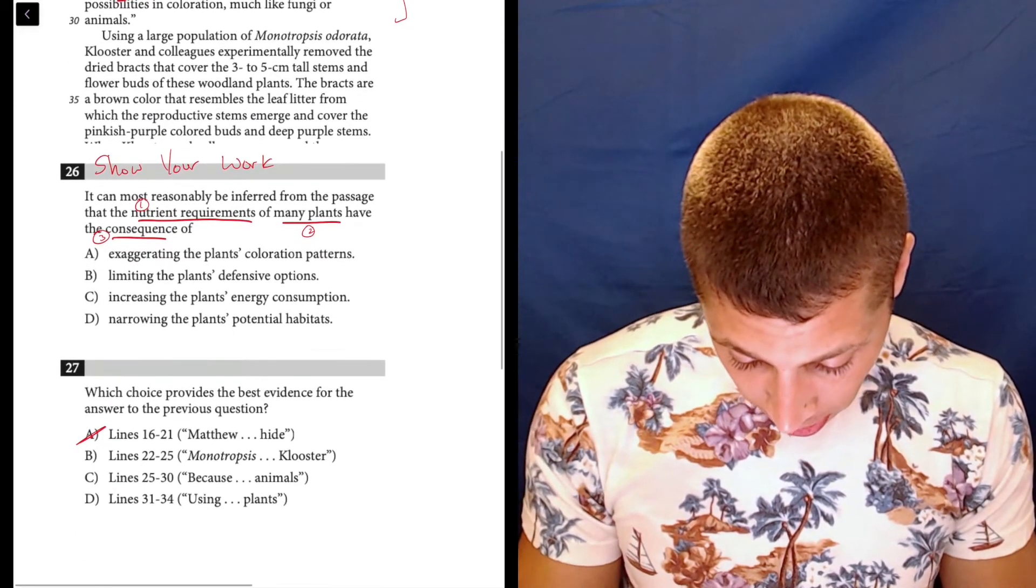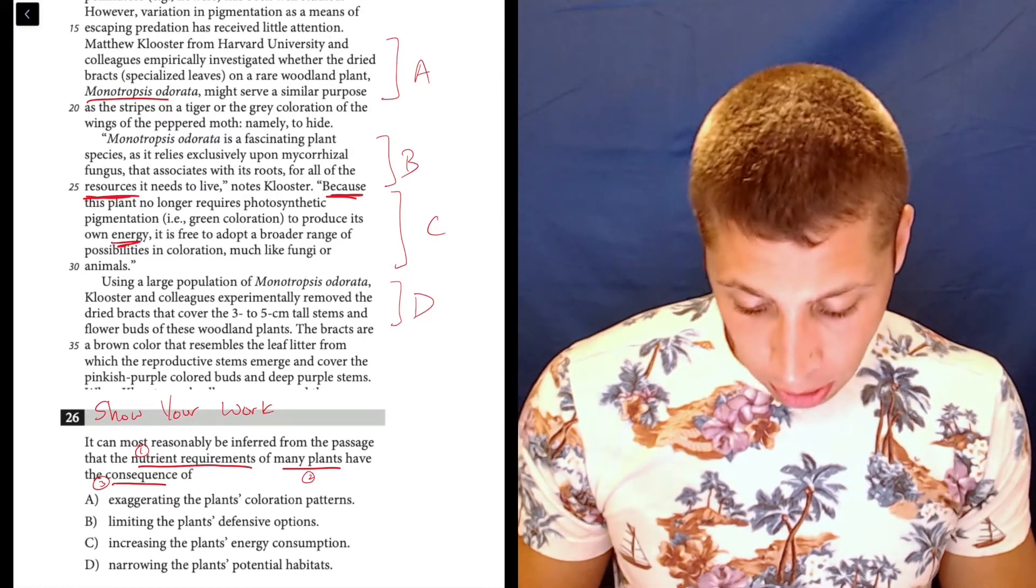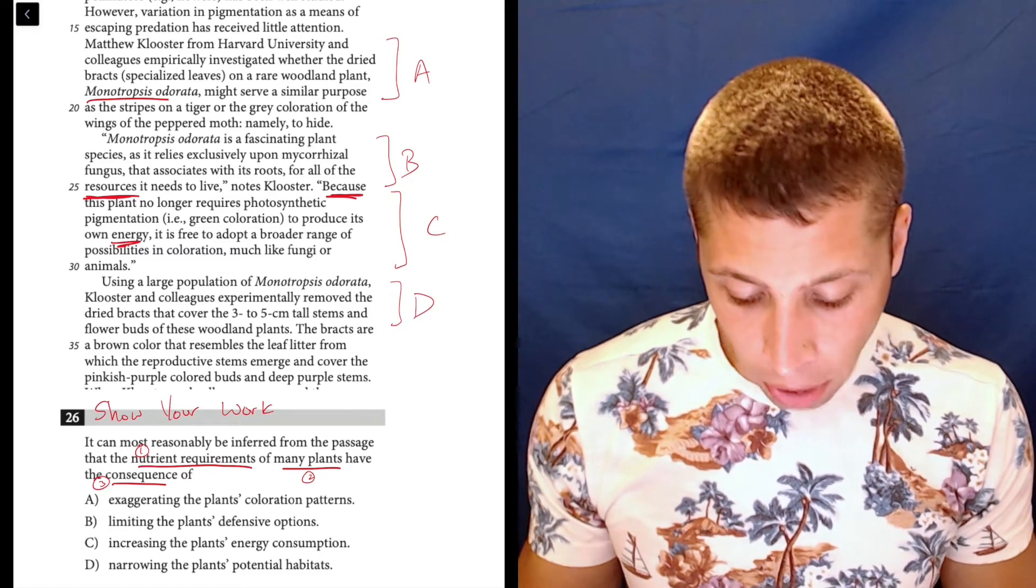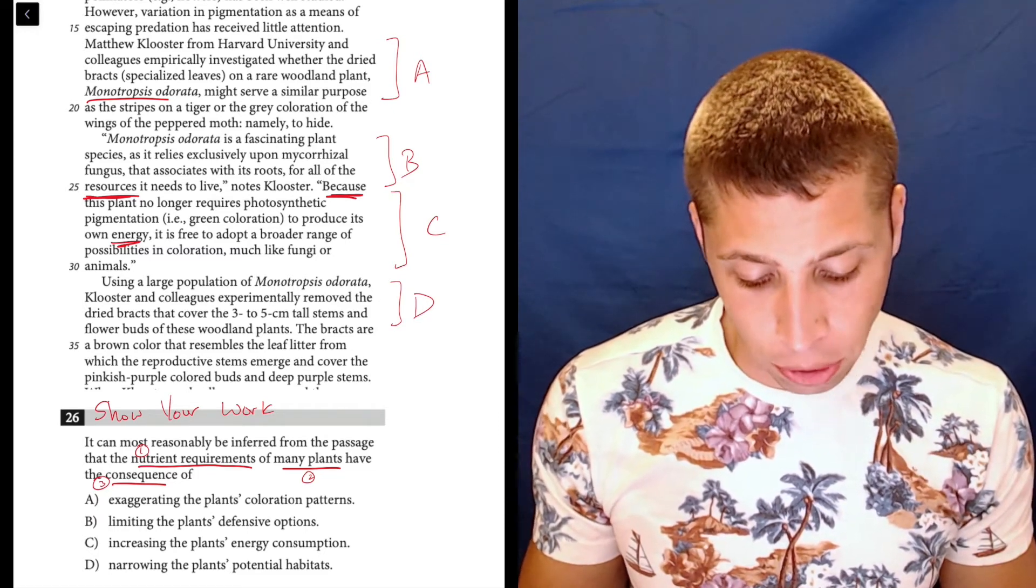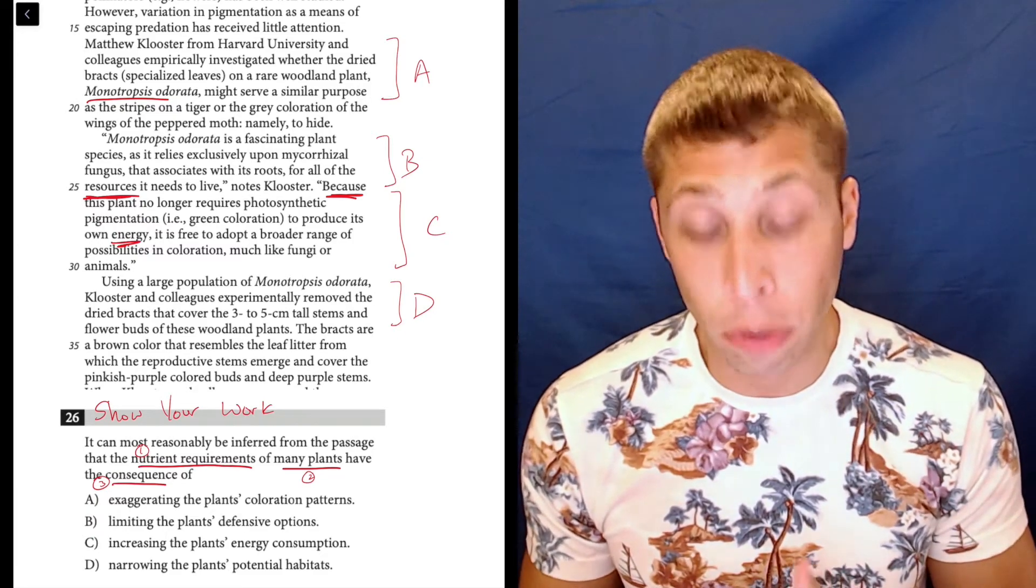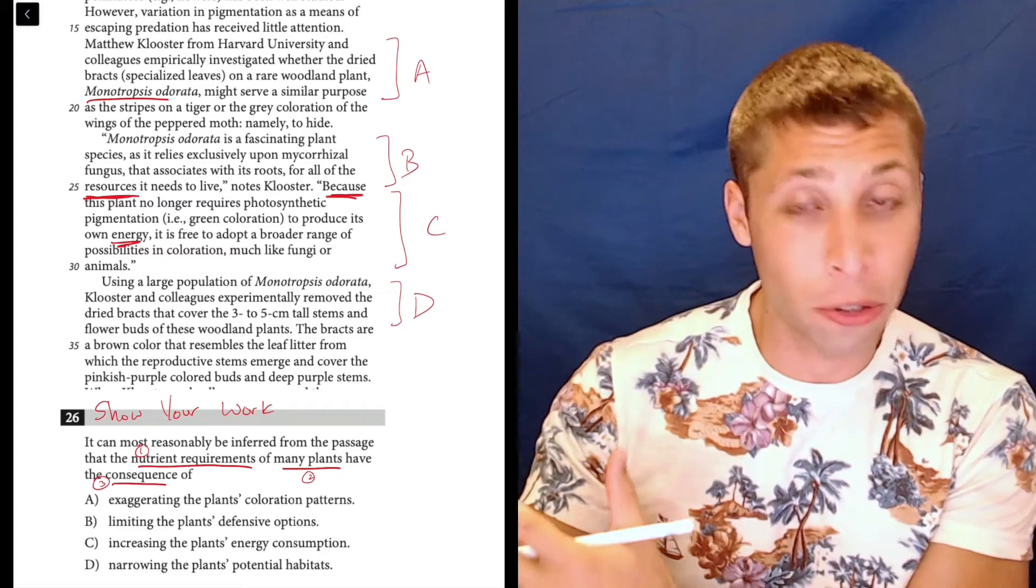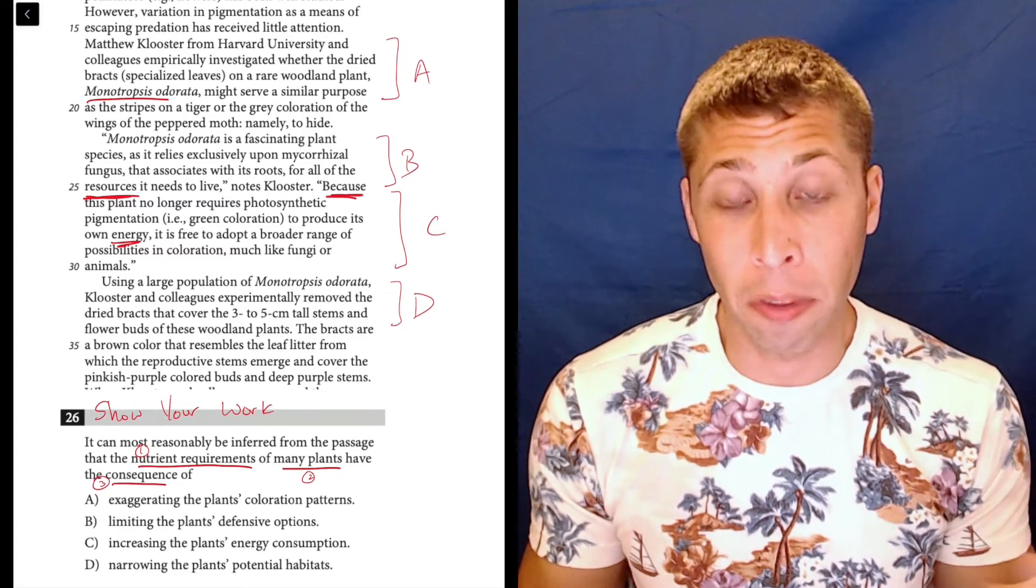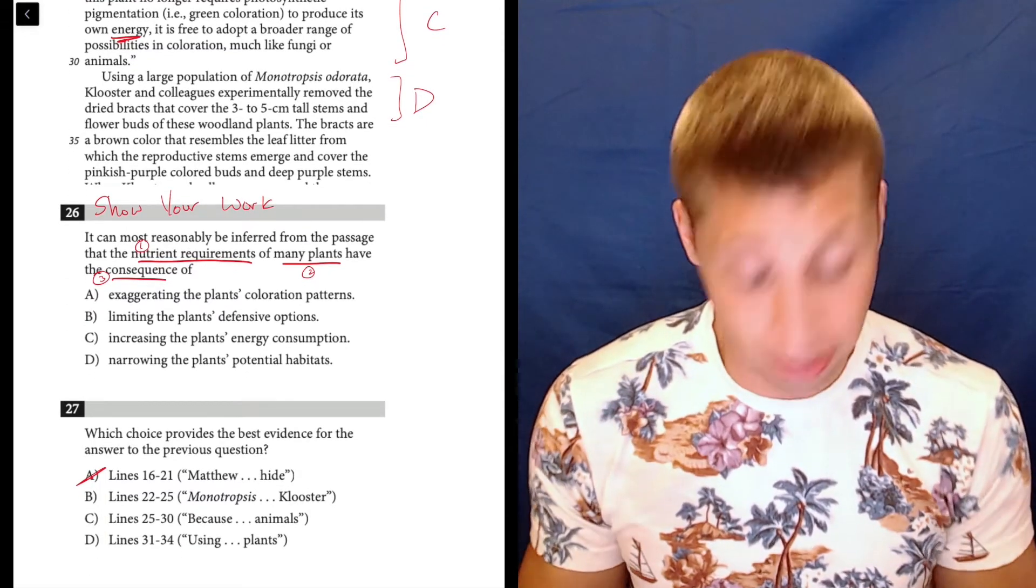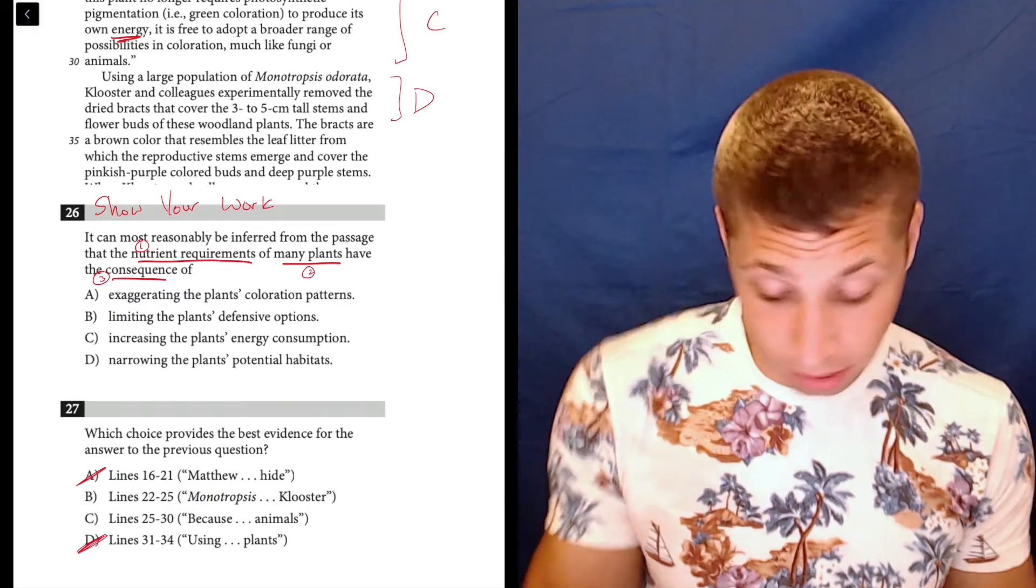Let's look at D, 31 to 34. Using a large population of Monotropsis odorata, Klooster and colleagues experimentally removed the dried bracts that cover the 3 to 5 centimeter tall stems and flower buds of these woodland plants. Well, that doesn't tell me anything about the nutrient requirements. There's no consequence here, because it's what the experimenters are doing, not any consequence of the plant itself. So this choice, I think, is bad. This is just some random science fact. So cool. I got rid of two choices on a hard question. That's a good start.